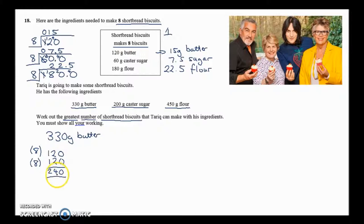So how much is left? 330 take away the 240 that I've already used is going to leave me with 90. So I've got 90 grams left. I can't put another 8 in because that's too big. Let's go to our 1 biscuits. How many 15s go into 90? 90 divided by 15 is 6. That's 6 more biscuits. So I've got 8, 8 which is 16, plus 6 means I've got 22 biscuits from the butter.